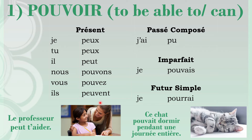Pouvoir has its own unique conjugation because it is irregular. In the passé composé, the past participle of pouvoir is pu, so it is j'ai pu, tu as pu, il a pu, and so on. In the imparfait, you take off the -ons from the nous form and add the endings: je pouvais, tu pouvais, il pouvait, and so on. For the futur simple, it has an irregular root: je pourrai, tu pourras, il pourra, nous pourrons, vous pourrez, ils pourront.